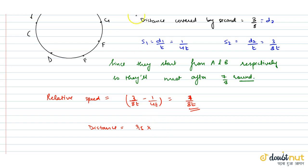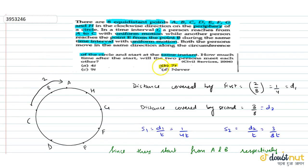Thik hai hame kya find karna hai? Sorry time hame find karna hai. Hame find karna hai kitnay time baad woh meet karayenge toh time hooga distance upon speed. Distance is 7 by 8 or speed is 1 upon 8T. They cancel out ho ga agar 7T ke equal. Toh after 7T time yeh loog vaapas meet karayenge that is option B is the correct answer.